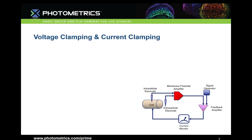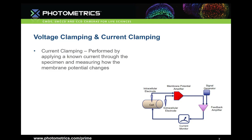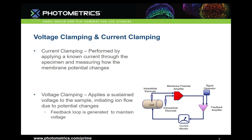Voltage clamping and current clamping are two similar techniques used in electrophysiology labs today. In current clamping, a signal generator applies a voltage to the cell which generates some change in the potential, which is then measured. In voltage clamping, a desired potential is named by the researcher. The signal generator applies a voltage which causes the cell membrane potential to shift. A recording electrode measures the potential changes and a feedback loop is generated between the signal generator and the recording electrode, adjusting the output voltage to only make up for the difference between the recorded potential and the desired potential.